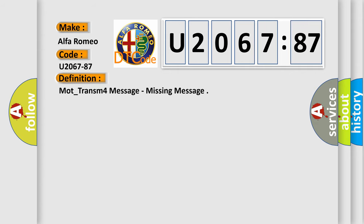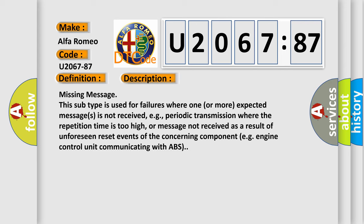The basic definition is: MOT_transom for message, missing message. And now this is a short description of this DTC code: Missing message. This subtype is used for failures where one or more expected messages is not received, e.g., periodic transmission where the repetition time is too high, or message not received as a result of unforeseen reset events of the concerning component, e.g., engine control unit communicating with ABS.